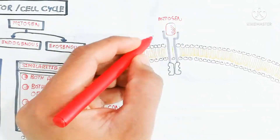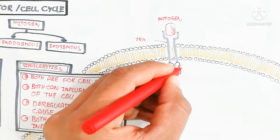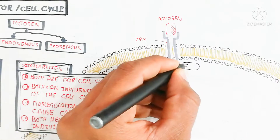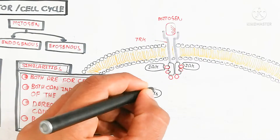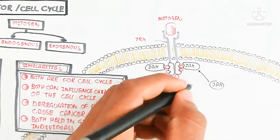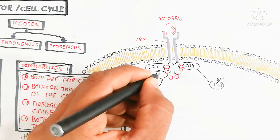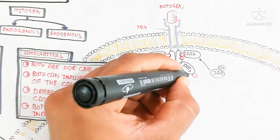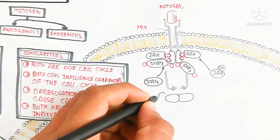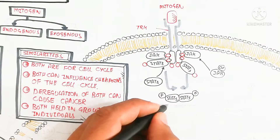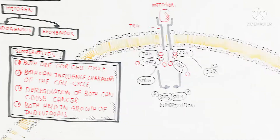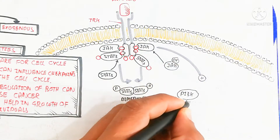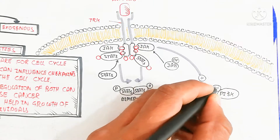If the mitogen binds with the tyrosine kinase receptor — the mitogen receptor — the extracellular and intracellular domains form a dimeric type. After binding with the mitogen, phosphorylation recruits the JAK protein and STAT3 protein. JAK docks with STAT3, causing dimerization. The phosphorylated STAT3 dimer becomes a transcription factor that binds with DNA to transcribe genes important for cell growth and the cell cycle.